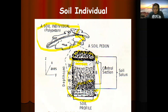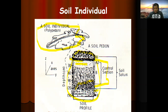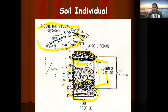Take note of the 'control section' — which is the A and the B horizon together. When conducting soil survey and classifying soils, we look into the different characteristics of the control section. The control section ranges from 0 to no more than 90 centimeters. In this area we look at the characteristics of soils in terms of temperature, water, physical properties, and chemical properties — so that by studying the control section, we can classify and name soils.